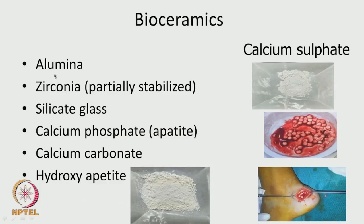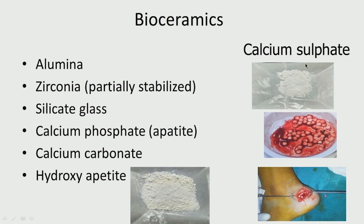If you look at bioceramics, alumina (aluminium oxide) is a ceramic material which finds a lot of applications. Zirconia — zirconium oxide — silicate glass (SiO2), different types, then calcium phosphate which is the apatite. Our bone contains a lot of calcium carbonate hydroxyapatite. All these are ceramics finding a lot of application. This picture is of hydroxyapatite.